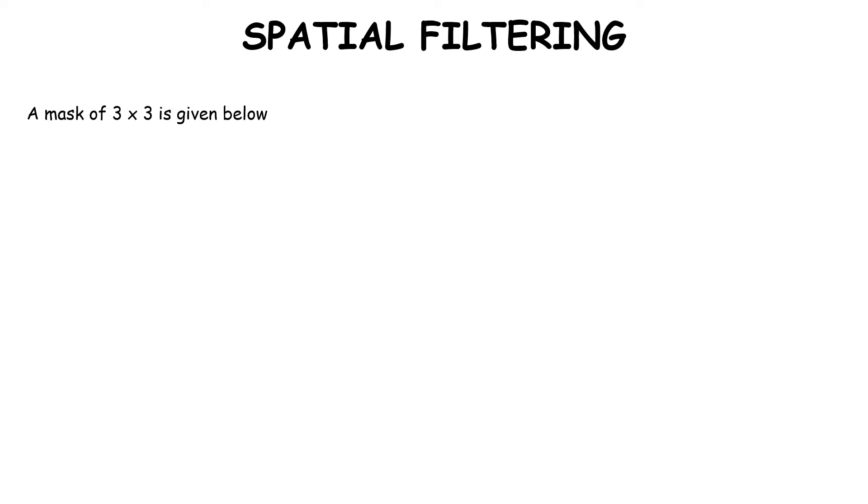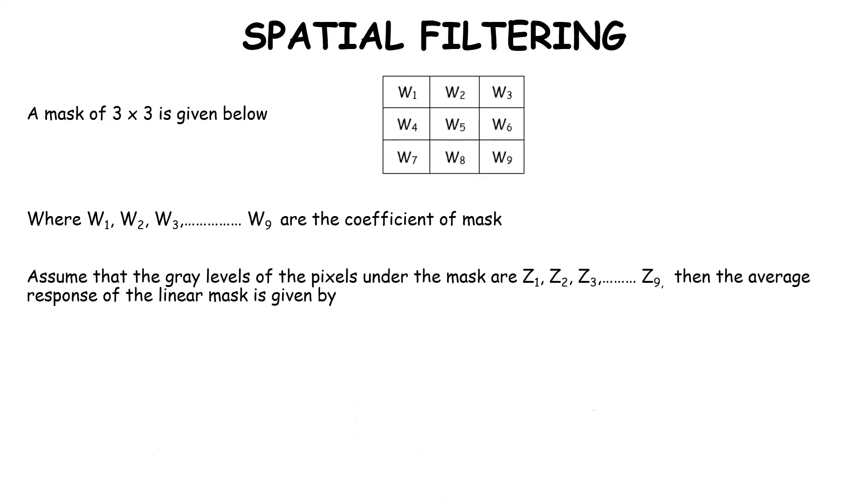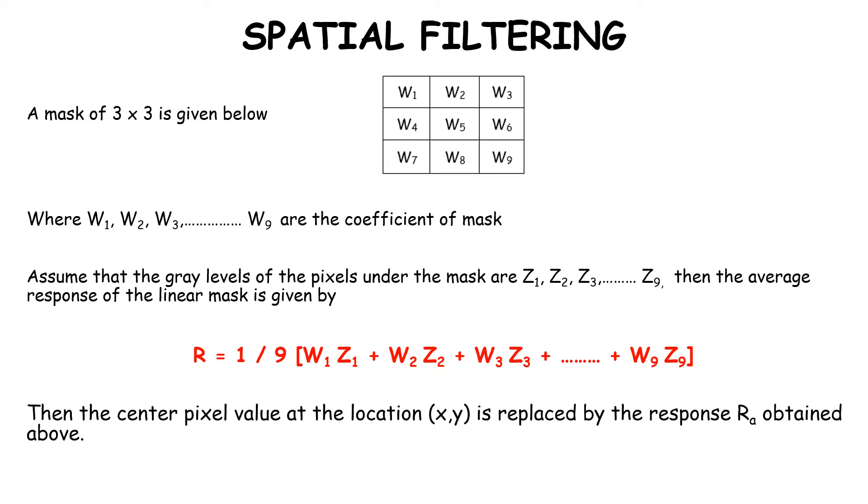Let us consider a 3×3 mask with values w1, w2, w3 till w9 as the coefficients of the mask. Assume that the gray levels of the pixels under the mask are z1, z2, z3 till z9. Then the average response of the inner mask is given by r = 1/9(w1z1 + w2z2 + ... + w9z9). The center pixel value at location (x,y) is replaced by the response r obtained above.